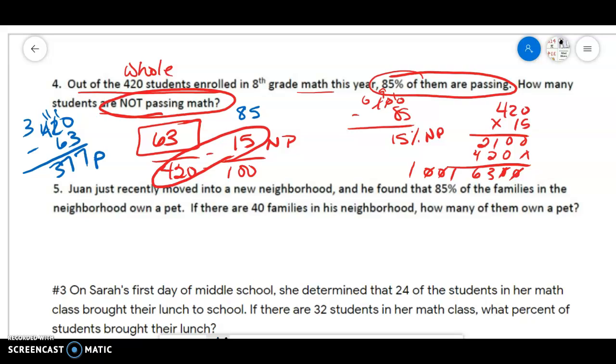Number two, Juan just recently moved into a new neighborhood. He found that 85% of the families have a pet. There are 40 families in the neighborhood. How many have a pet? So this one is not a tricky one. Here is our original, our 100%. 40 people are in the neighborhood. That's our 100%. And we want to know what 85% of that is.